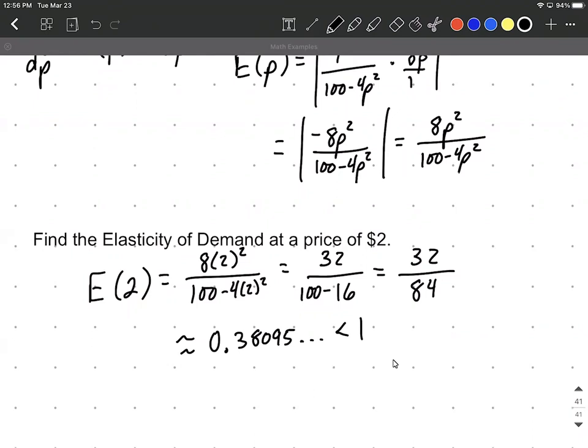So, because that's a value less than 1, we refer to this as being inelastic. And what that tells us is we should raise our prices. Now if that had actually equaled 1, we'd refer to this as being unitary, and our prices are set perfect. We shouldn't change our prices at all, they should stay the exact same.